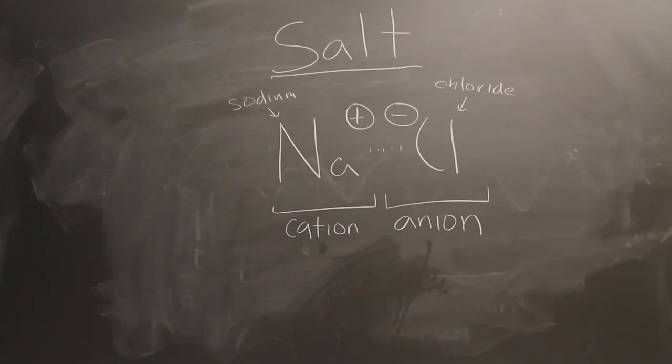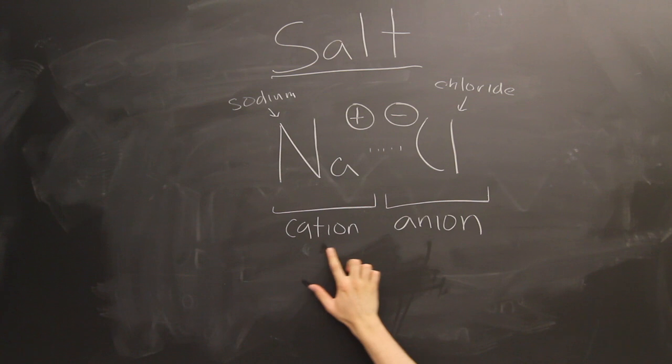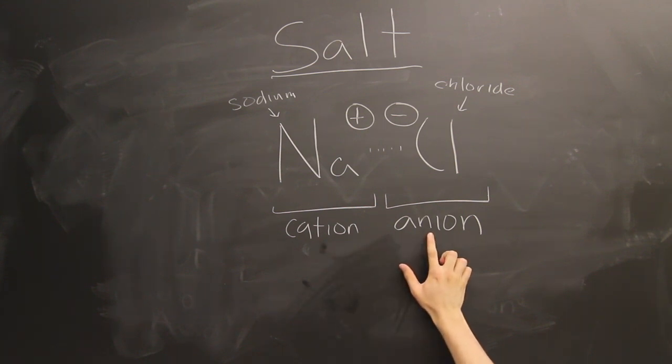A salt, in chemistry terms, is a molecule composed of a related number of cations, or positively charged ions, and anions, or negatively charged ions, so that the product is electrically neutral.